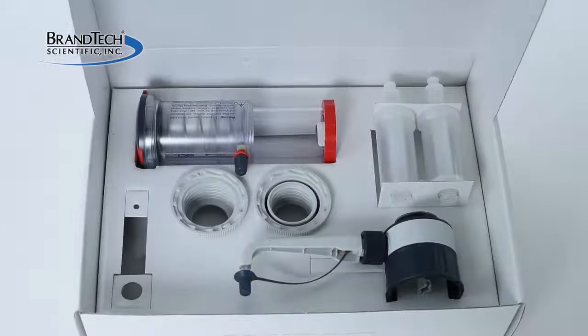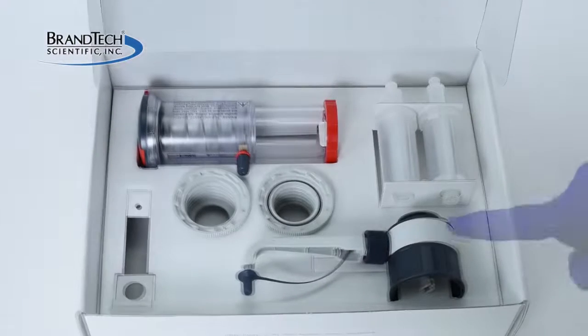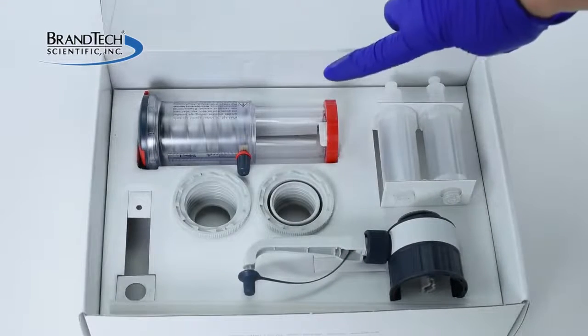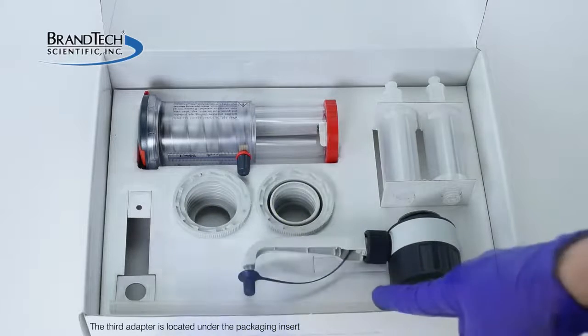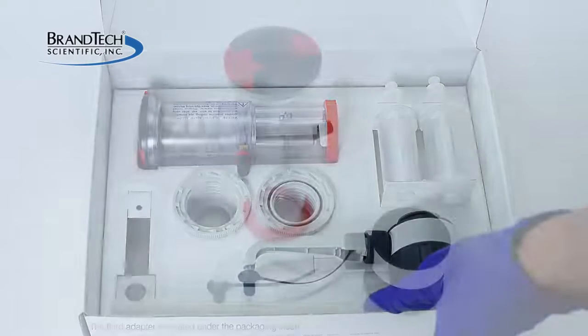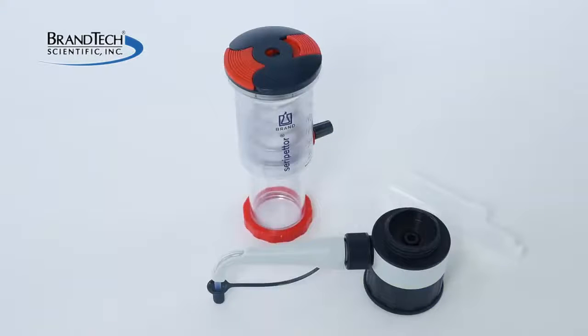When opening the box for the first time, you'll find one valve block, one pump assembly, two dispensing cartridges, three bottle top adapters, and one filling tube.